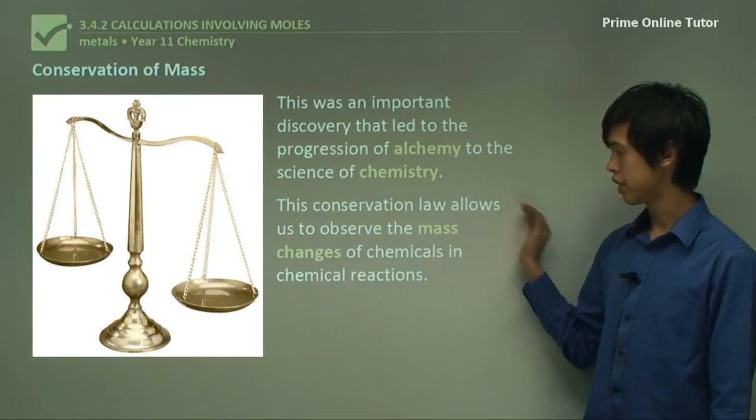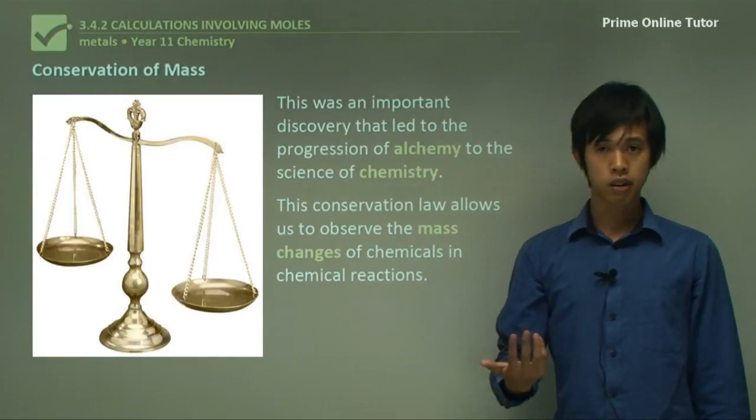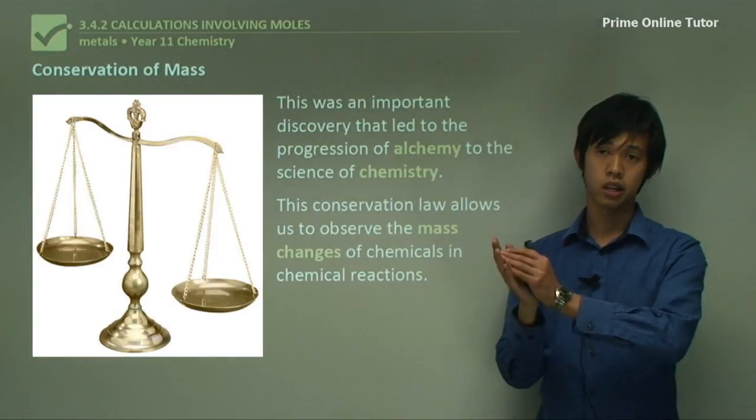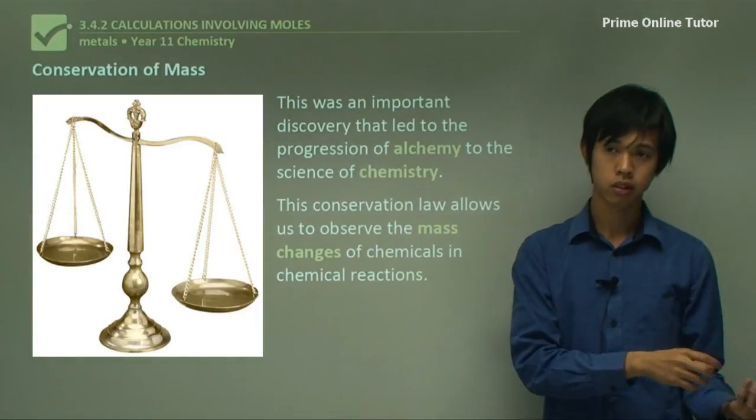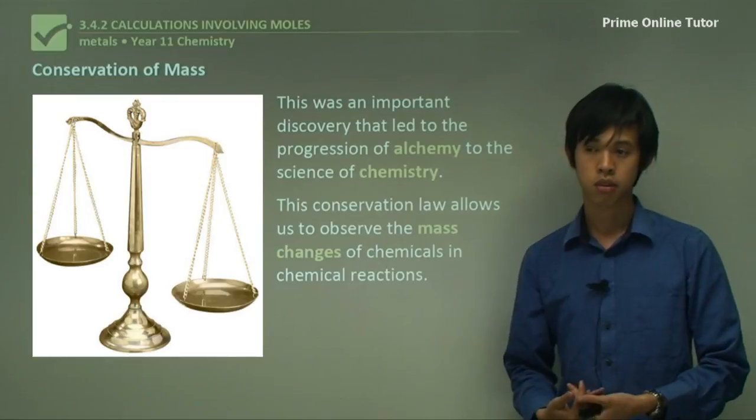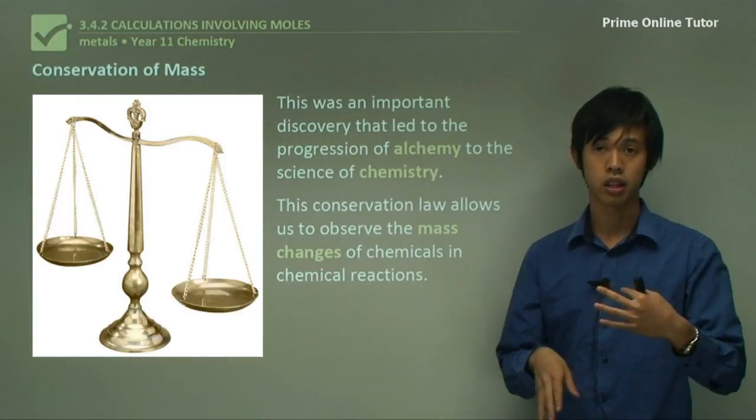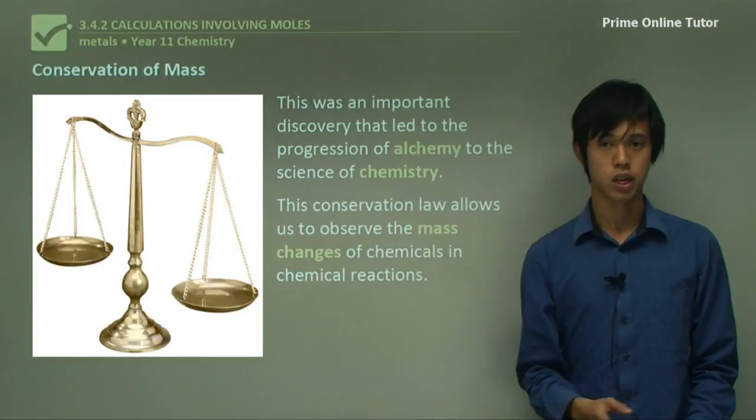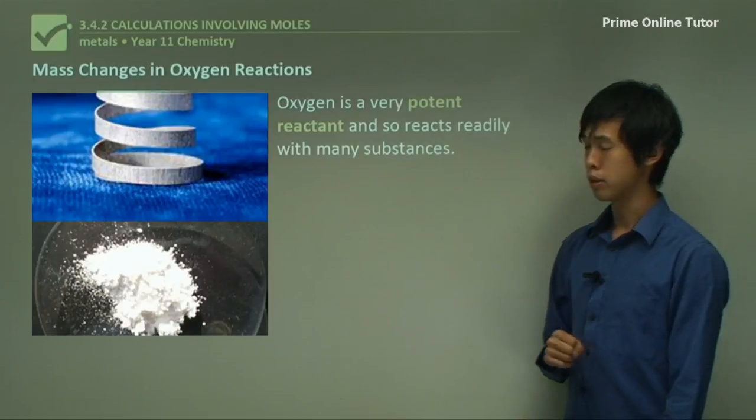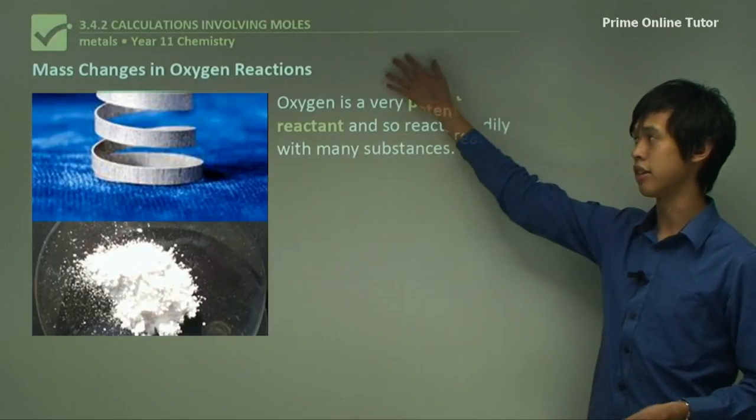Now this conservation law, the conservation of mass, allows us to observe the mass changes of chemicals in chemical reactions. So it allows us to look at one chemical and see how its mass is changed when it's bonded to something else, and then allows us to figure out things about that reaction, just by using the conservation of mass.